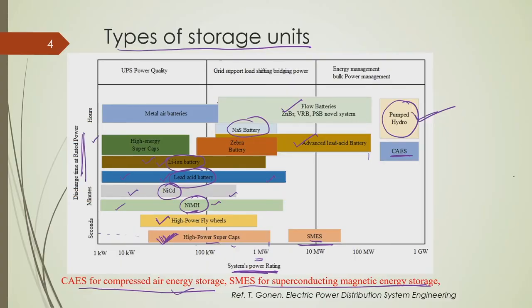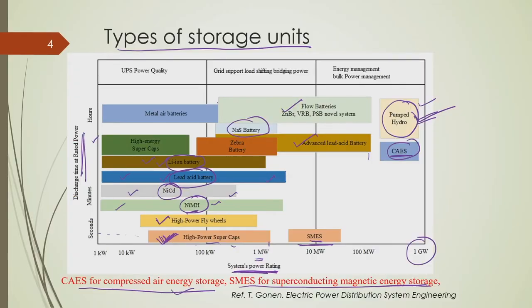The advantage of pumped hydro is that it can provide gigawatts of power for a very long time — maybe 4 to 5 hours. However, its construction is costly and requires large amounts of space and various environmental considerations. CAES is also used in some parts of the world, and other types of batteries can also be used as storage.